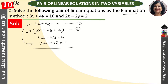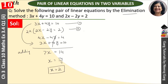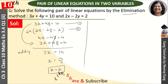Adding the two equations, the y terms cancel out. We get 7x is equal to 14, which means x is equal to 2. Now we have the value of x.